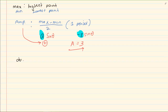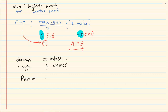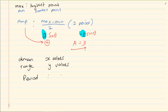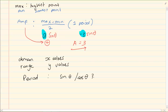You have the domain, which is the x values, and the range, which is the y values. Then we have the period. In grade 10 it is quite consistent — the period is one complete graph. For sin and cos it is 360 degrees, and for tan it is 180 degrees.